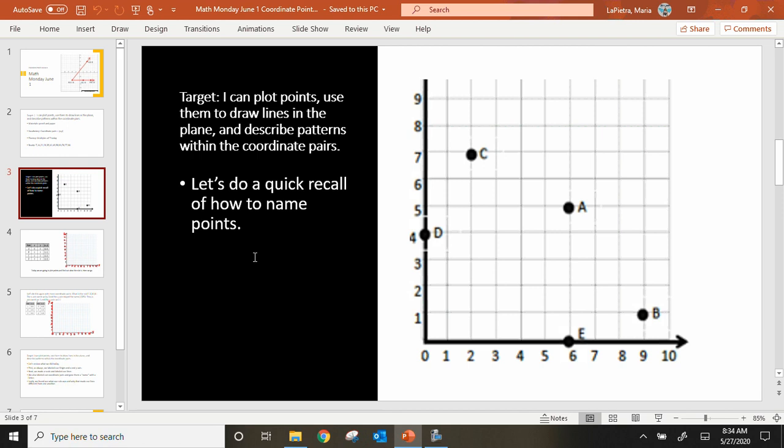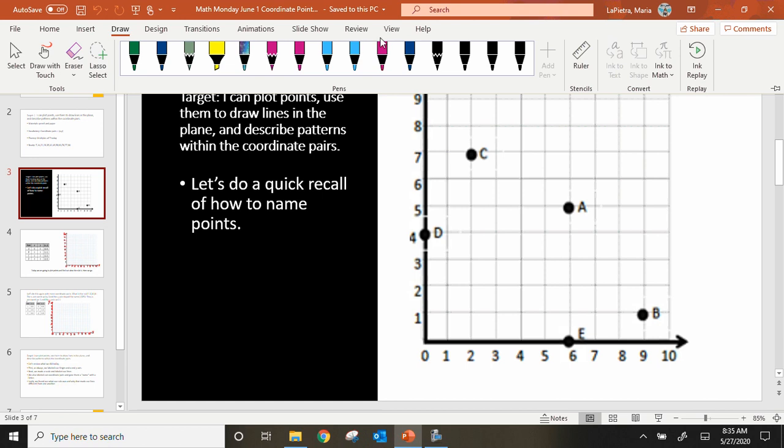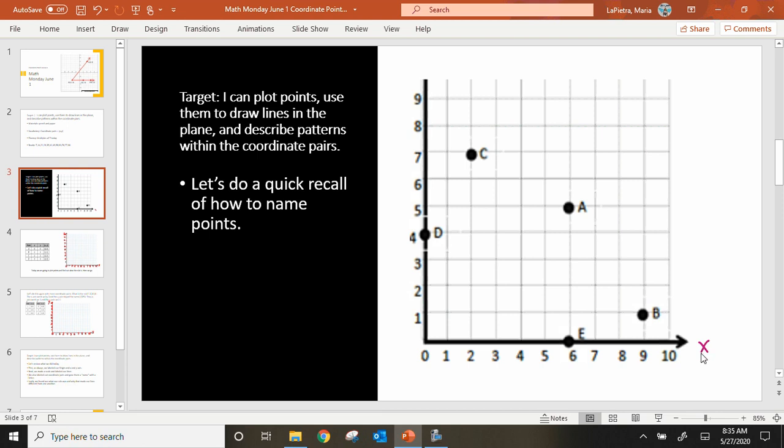Our target: I can plot points, use them to draw lines in the plane, and describe patterns within the coordinate pairs. Let's do a quick recall of how to name points. Two things to begin: We need to label our X and our Y. Our X is always side to side, which is horizontal, and our Y is always vertical, up and down. The X will always come first. Your Y will always go second, in that order, forever.